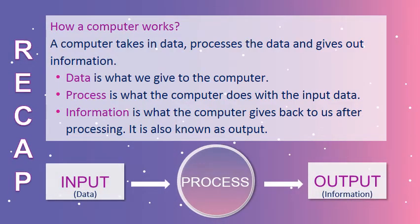Now let us see how a computer works. A computer takes data, processes the given data, and gives out meaningful information. Data is what we feed into the computer. Changing the data into meaningful information is called processing. After processing, the computer gives back the result.